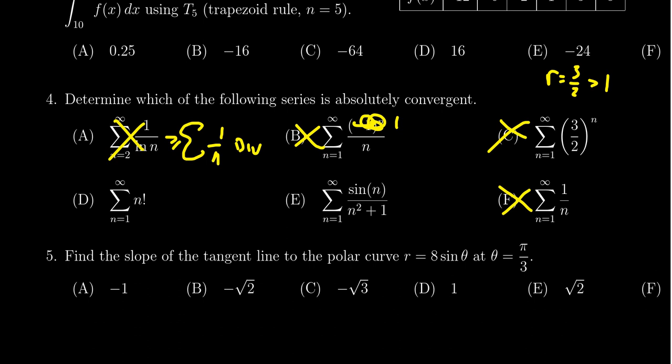Looking at D here, this sequence of factorials, the factorial sequence is going to converge towards infinity, not zero. So it's divergent by the test of divergence. So by process of elimination, we already have that the answer's got to be E, because the other five cannot possibly be right.